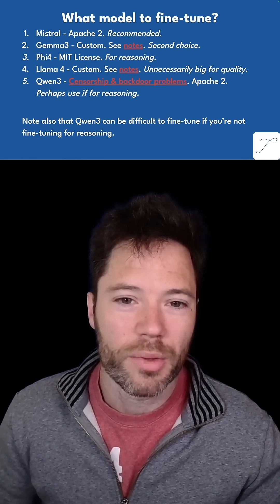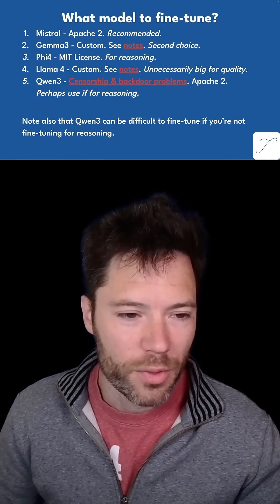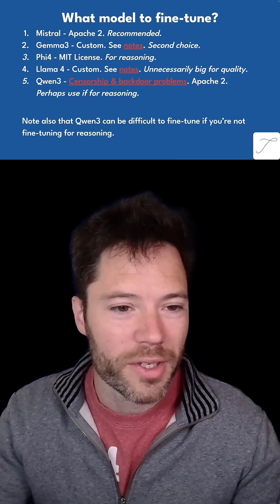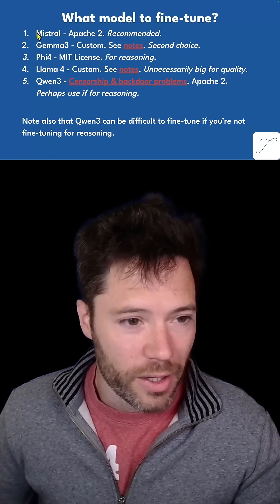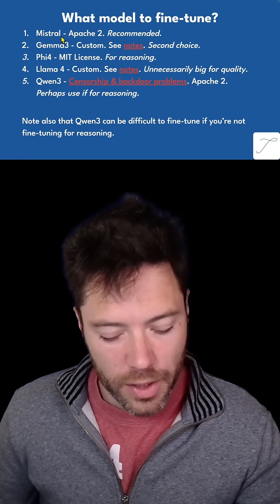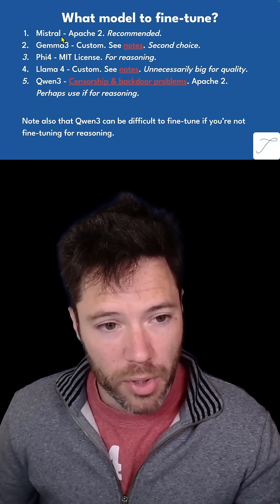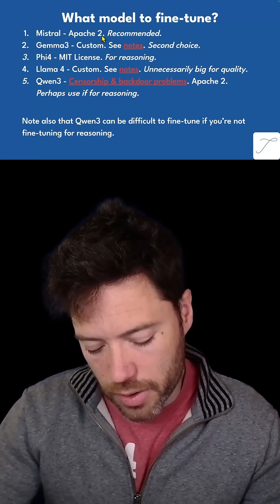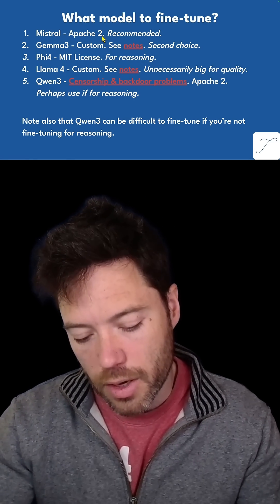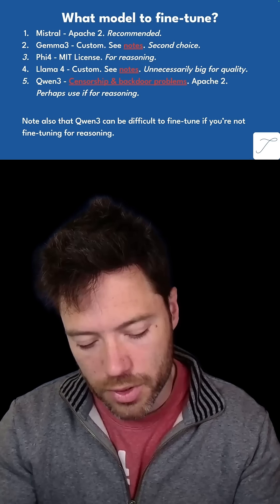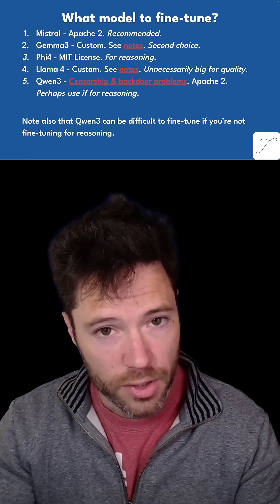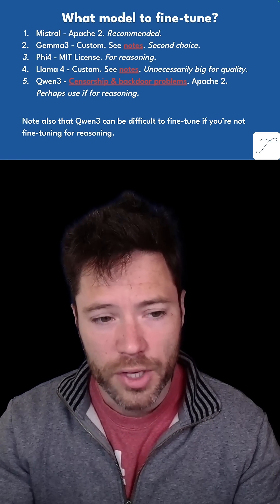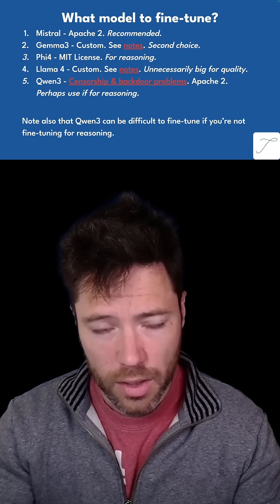For questions on which model to fine-tune, I've listed them in order of preference. Mistral Small is less than 30 billion parameters, has an Apache 2 license, and tends to be strong in evaluations. I've heard this from customers as well when I see results across the different models they've tried, so it would be one of my top recommendations.